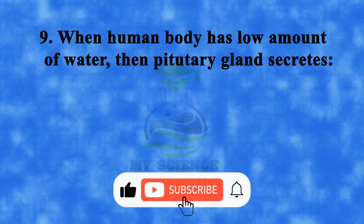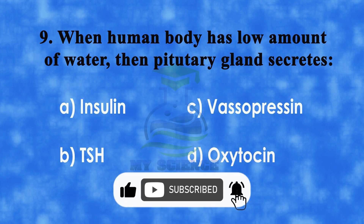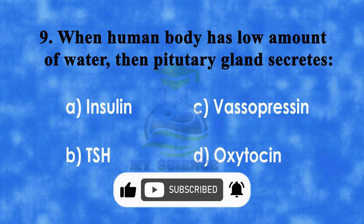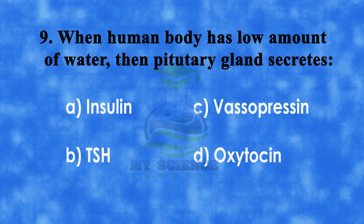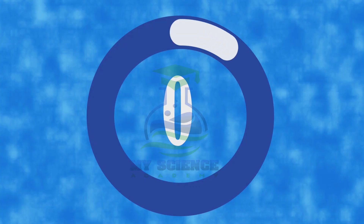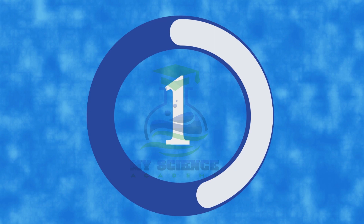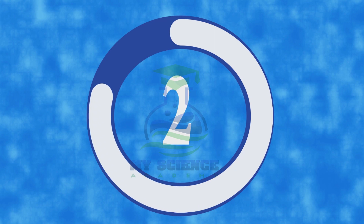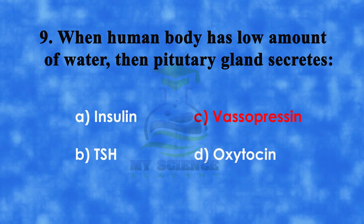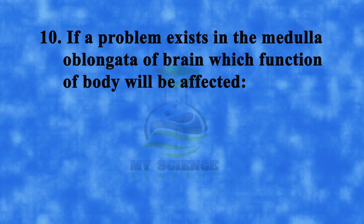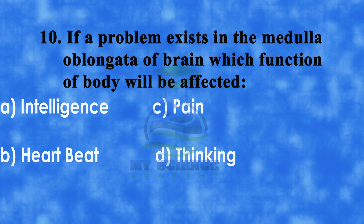Number 9: When human body has low amount of water, then pituitary gland secretes. A: insulin, B: TSH, C: vasopressin, or D: oxytocin. And correct answer is C: vasopressin.